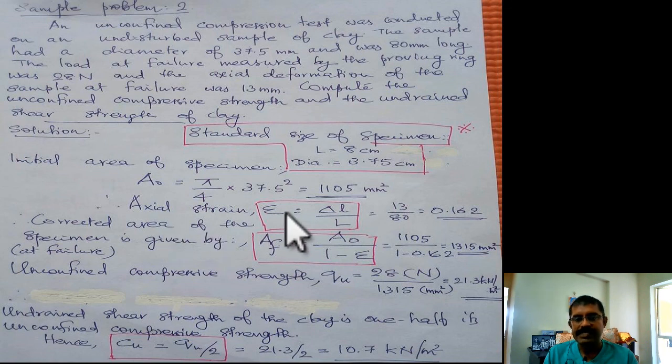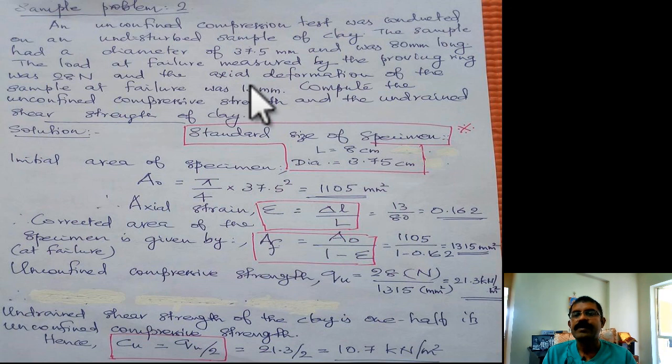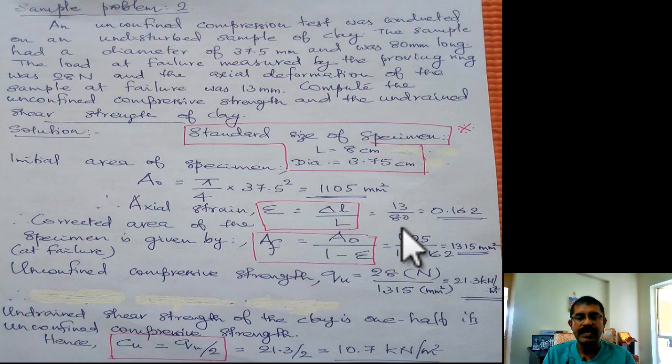Axial strain can be calculated by the expression ΔL/L. ΔL is given in the question as 13 millimeter. The axial deformation is 13 millimeter and actual length or initial length is 80 millimeter. So you get the axial strain 0.162.